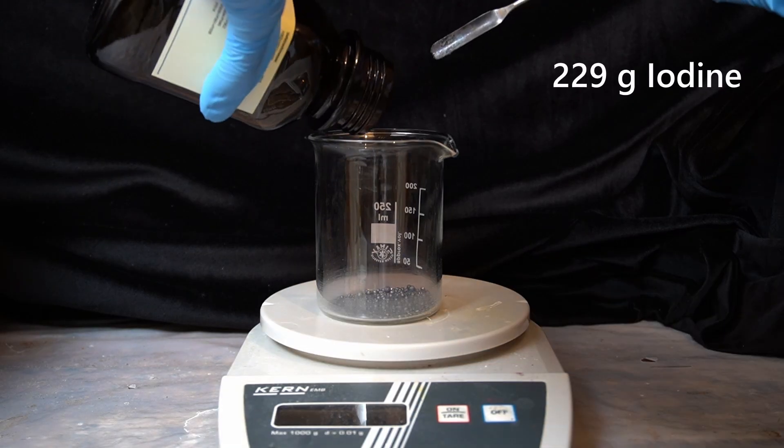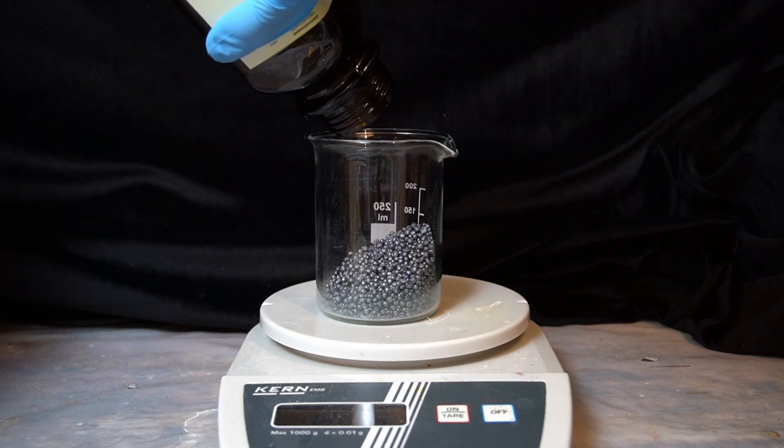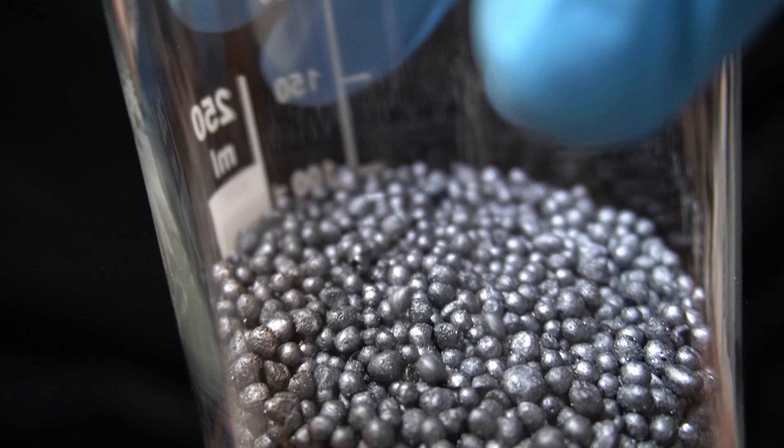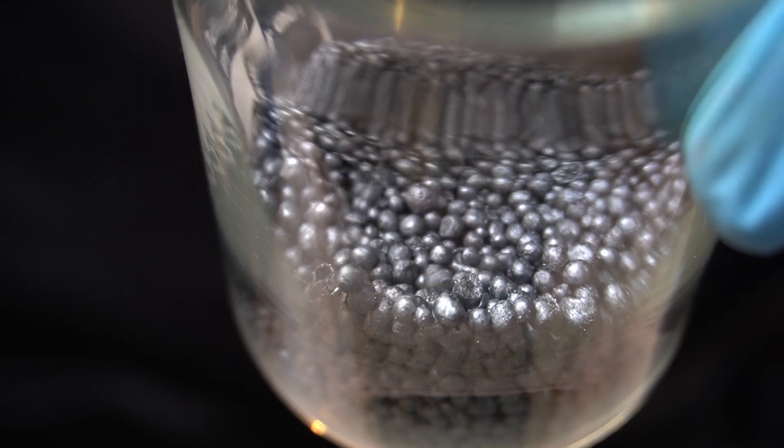229 grams of iodine are now weighed out in a separate beaker. Elemental iodine is a beautiful crystalline compound with a metallic shine to it. The commonly sold version however will come in these small beads.